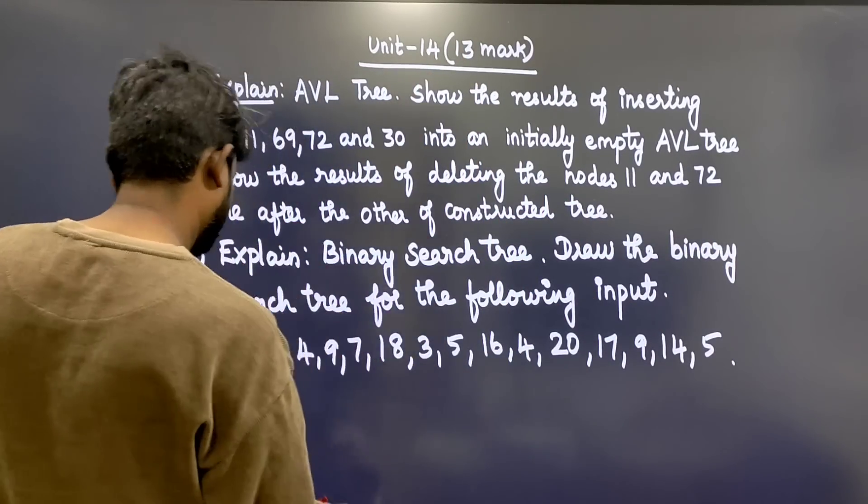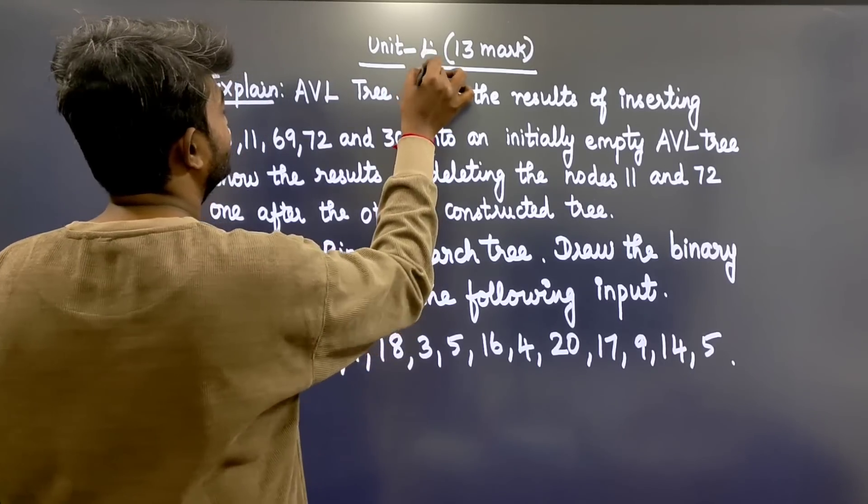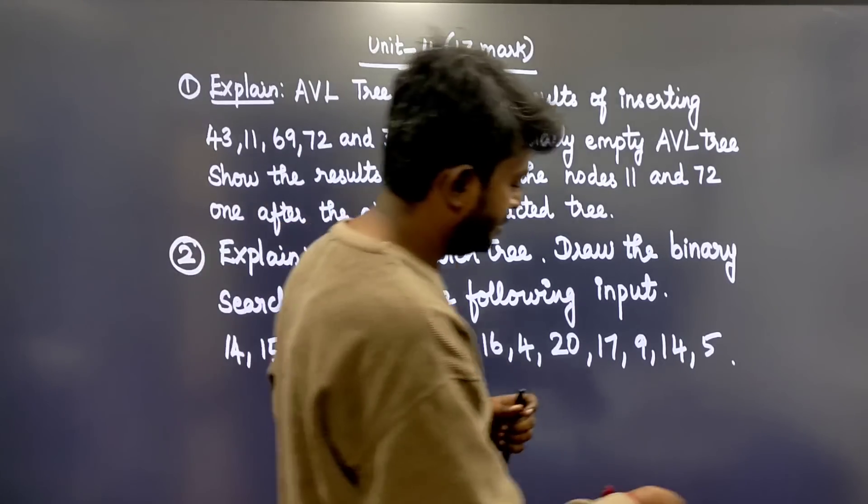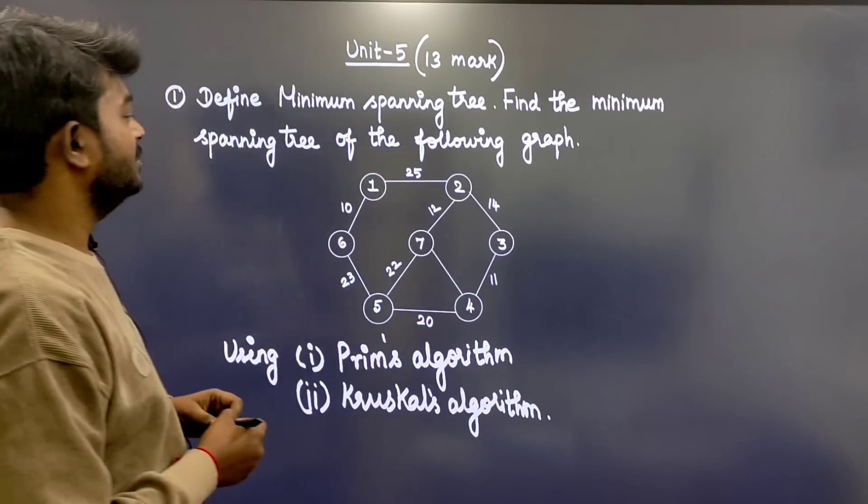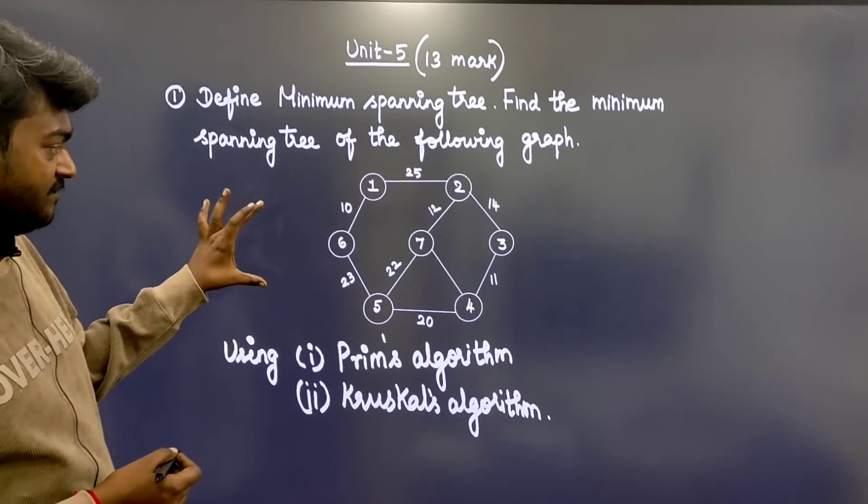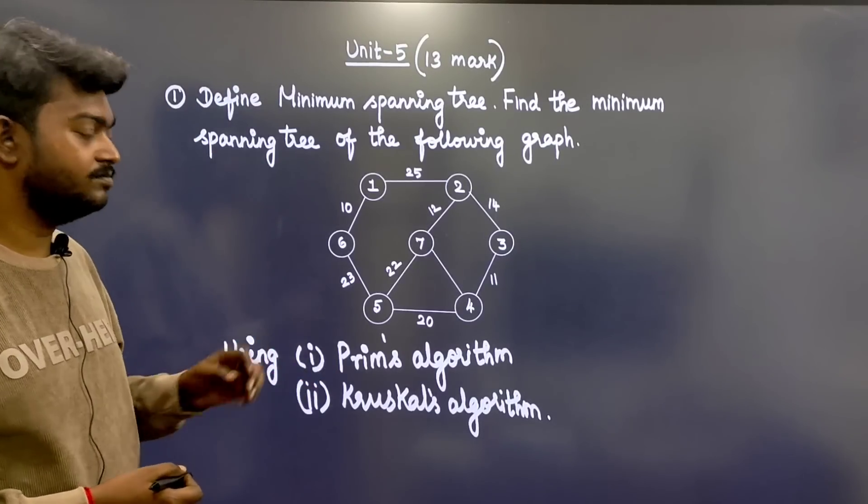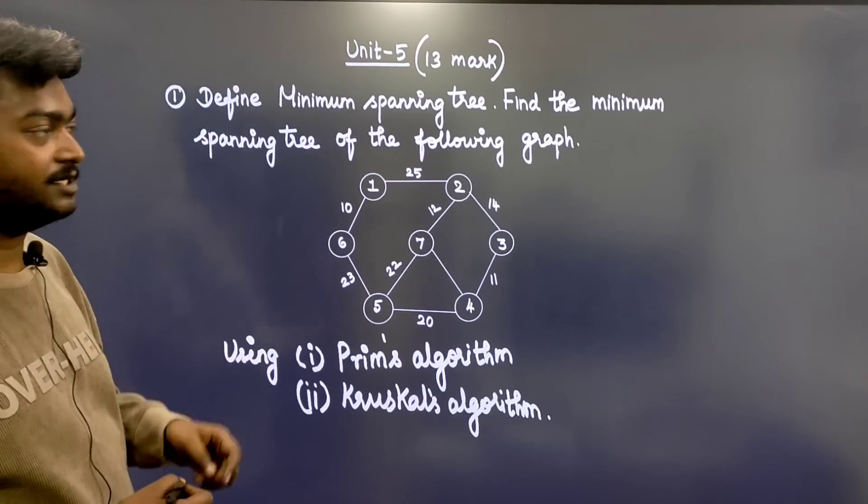Unit 5: Define minimum spanning tree. Find the minimum spanning tree of the following graph. You can use Prim's algorithm or Kruskal's algorithm.